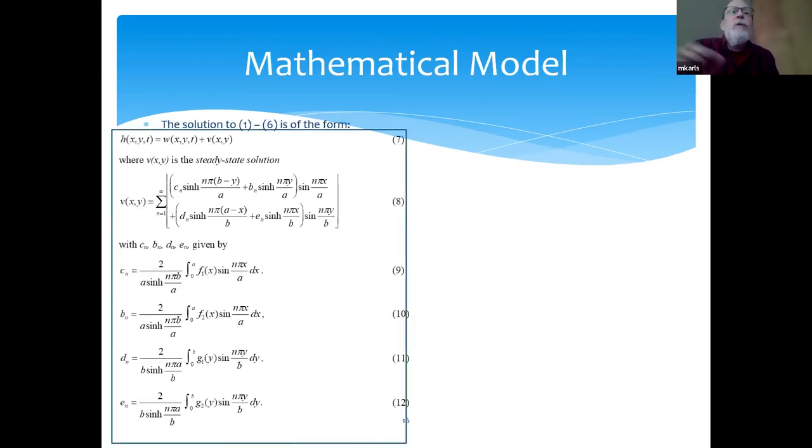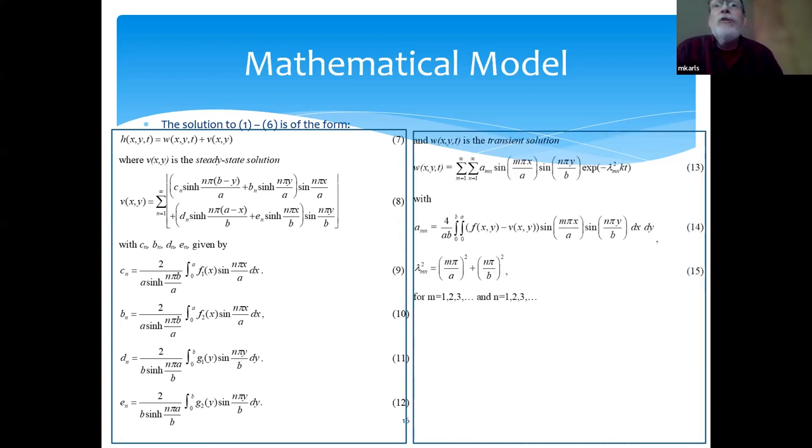So it's of this form here. The hydraulic head h, which is a function of position x, y, and time t, is equal to function W, that's a transient function, plus a function V, which is a steady-state solution. So here's the steady-state solution here for V, and then here's the transient solution for W.